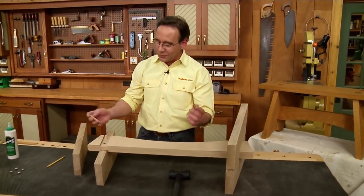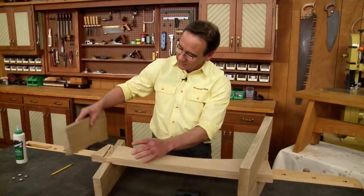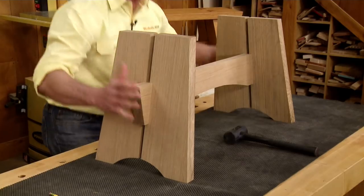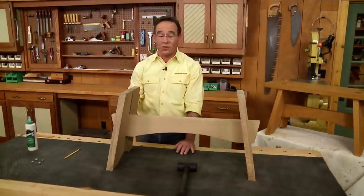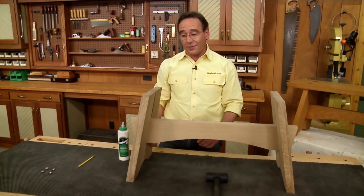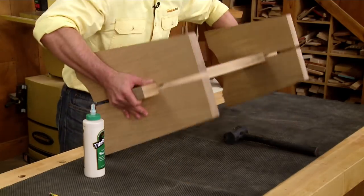Once you get all the holes drilled, it's time for a little bit of dry assembly because you don't want any surprises when you start adding glue. Now, there, that looks pretty good. Now, speaking of glue, since this project is going to spend some time outdoors, it's a good idea to use a waterproof glue. Now, all I have to do is take this apart, apply some glue to the dowels and the joints, and it's ready to go together.